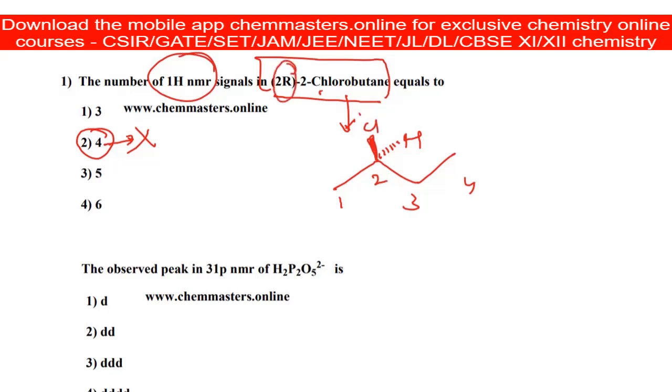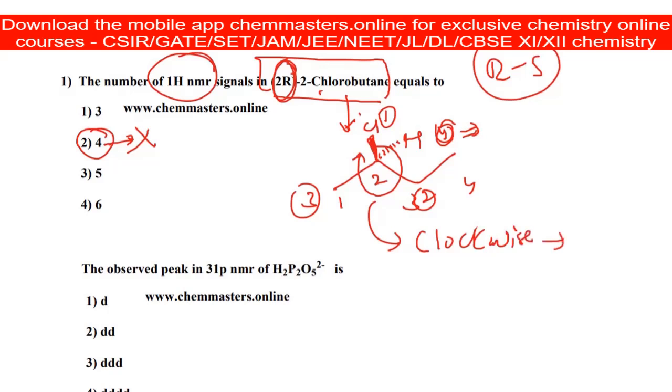We need to give RS notation and it should be R. Give the priorities according to RS rules: first priority for chlorine, second priority for branching CH2, third priority for methyl group, and fourth priority for hydrogen. The fourth priority hydrogen is back side with thin lines. Following the priority order, which is clockwise, gives R notation. The chiral carbon is given with R notation. This is the correct representation of 2R-2-chlorobutane.